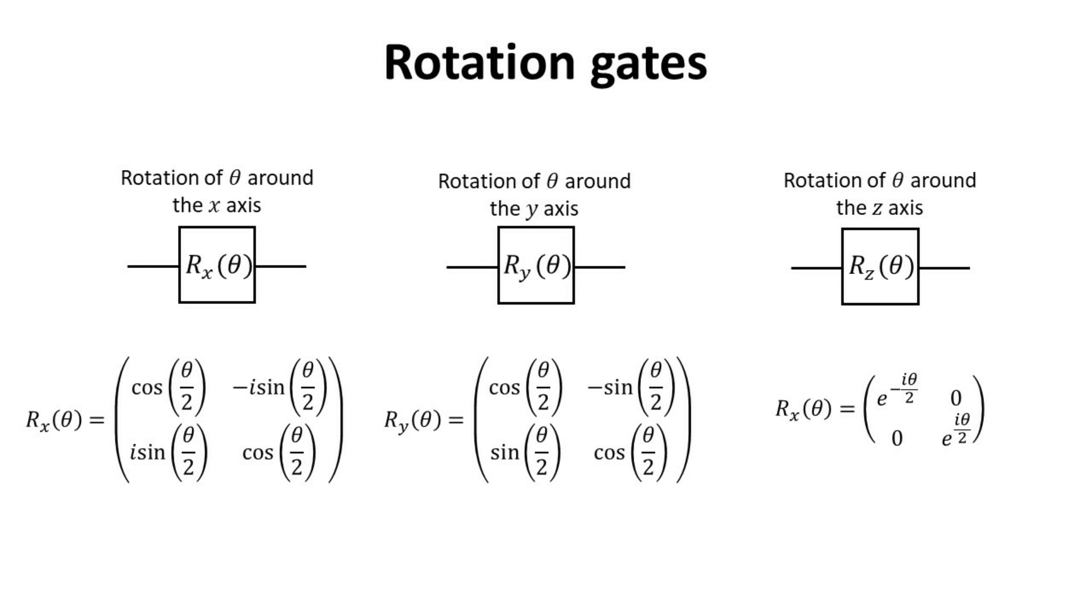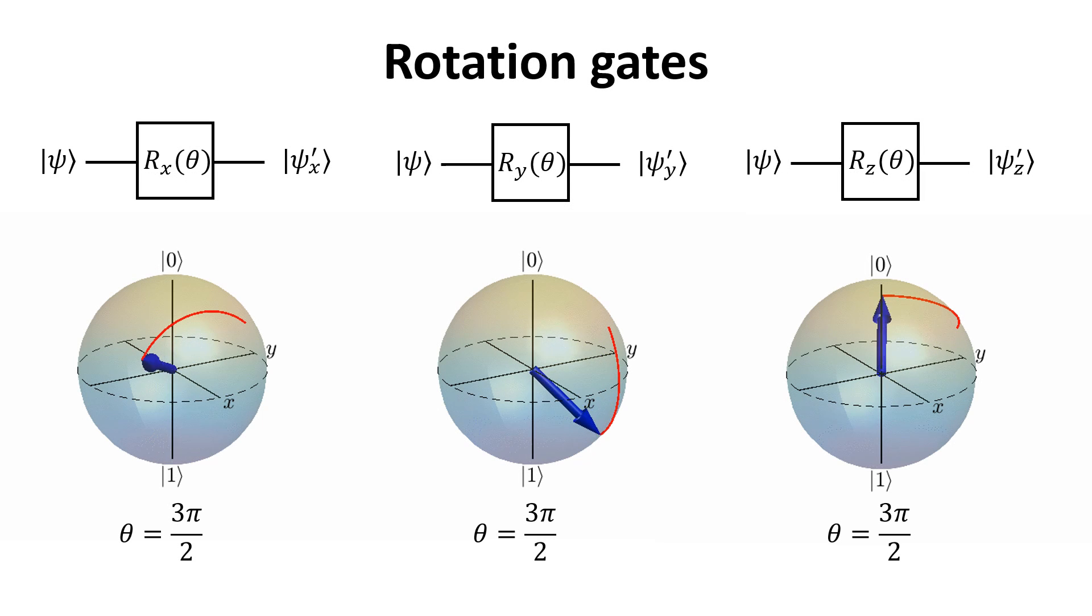Thus, by extension, the Pauli X, Y and Z gates can be generalized to rotation gates which performs rotation at arbitrary angle theta instead. Their respective matrix representations can be obtained from the general spin one-half rotation matrix. We illustrate here the respective rotation gates operation on the Bloch sphere, with the angle theta equals to 3 pi over 2.